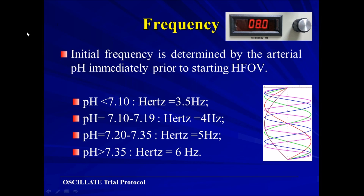Regarding frequency, the initial frequency is determined by the arterial pH immediately prior to starting high-frequency oscillation ventilation. If the patient is severely acidotic with pH less than 7.10, we start with 3 to 3.5 Hz. If pH is 7.10 to 7.19, we start with 4 Hz. For moderate acidosis of 7.20 to 7.35, we start with 5 Hz. If the patient has normal pH above 7.35, we start with 6 Hz. This is adapted from the OSCILLATE trial protocol.